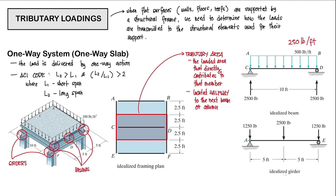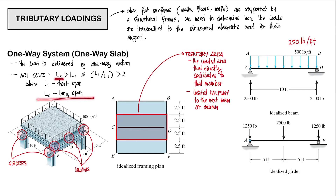As a side note, some slabs or surface structures may be supported in two directions. We need to determine if the structural system is a one-way or two-way system. From the ACI code: when L2, the long span, is greater than L1, the short span, and L2 divided by L1 is greater than 2, then it is a one-way system.